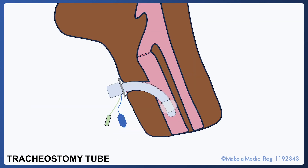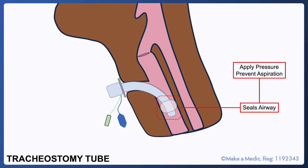This is what a tracheostomy tube looks like in situ. You can see how the cuff seals the airway and creates a closed circuit between the ventilator and the patient's lungs so that pressures and volumes delivered to the lungs can be controlled without the air leaking upwards and outwards.